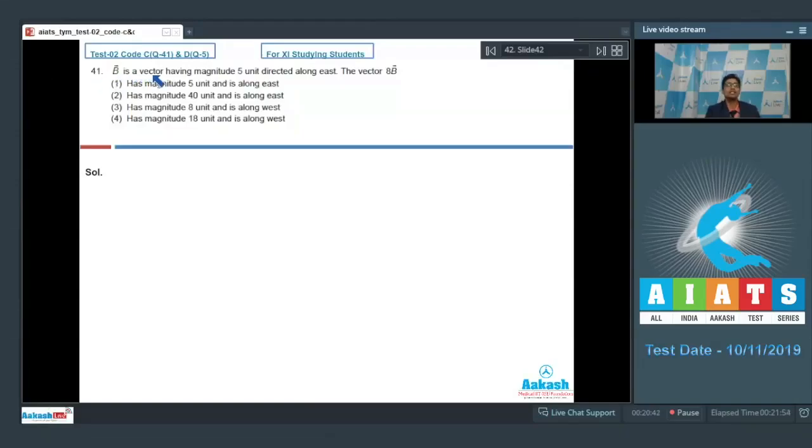Question number 41 says that B is a vector having magnitude 5 units directed along east, the vector 8B vector. If we multiply a vector B vector by 8, which is a positive number, then the magnitude of this vector would be 8 times the magnitude of B vector. Since the magnitude of B vector has been given to be equal to 5, the magnitude of 8B vector would be equal to 8 multiplied by magnitude of B, that will be 8 into 5, that is 40.